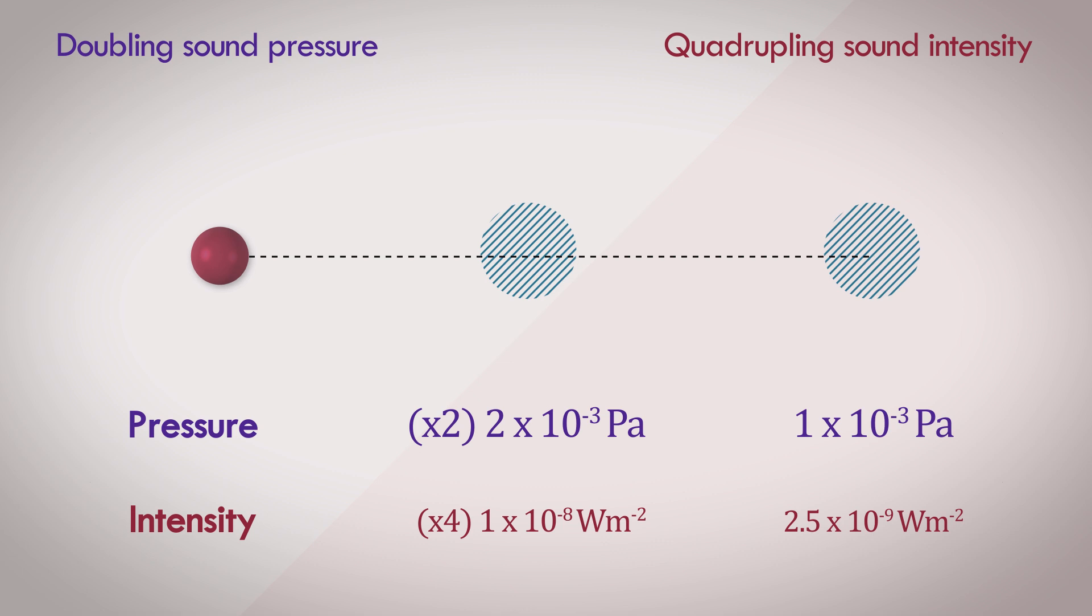Let's bring decibels into the picture. Double the pressure, you get +6 dB of SPL. Quadruple the intensity, and you get +6 dB of SIL. So you don't really need to think about pressure or intensity when you're dealing with relative changes of values. Both the decibel value of pressure and intensity will beautifully just equate to the same thing, which is one of the nice quirks of the decibel unit.